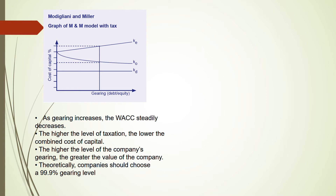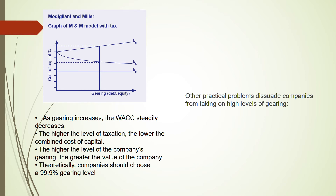So according to MM theory, a company should choose a gearing level of 99.9% — because if cost of capital keeps decreasing with higher gearing, theoretically debt should be 99.9%. This is according to the theory only; you don't need to understand the exact logic behind 99.9% versus 100%. However, there are practical problems that prevent companies from taking on such high gearing, such as bankruptcy costs.